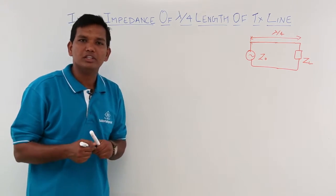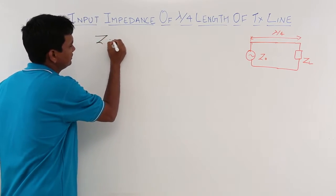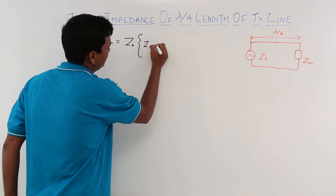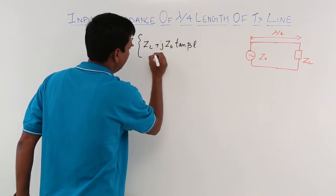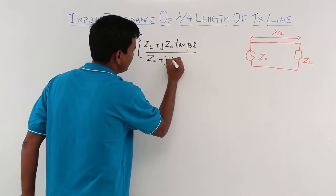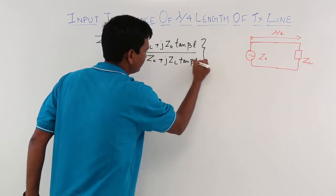What I know is the basic equation of input impedance: zin is z0 times (zl plus jz0 tan beta l) divided by (z0 plus jzl tan beta l).